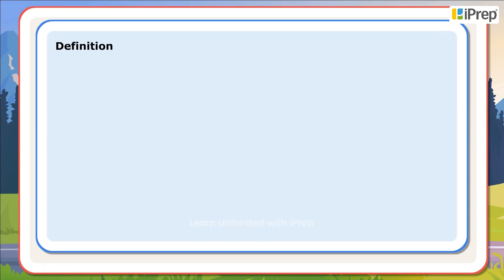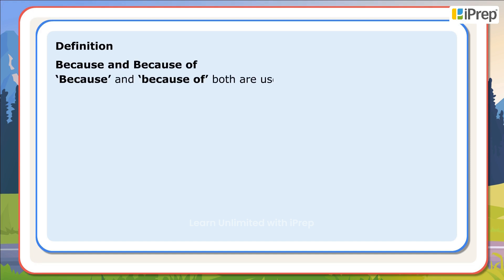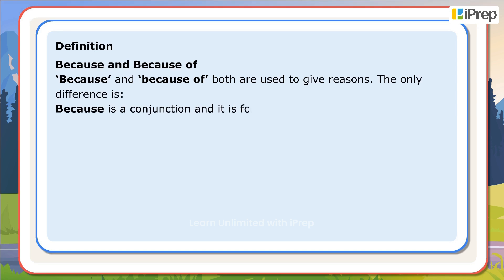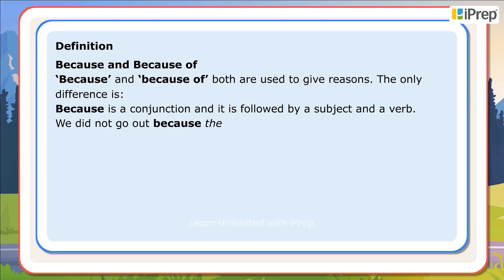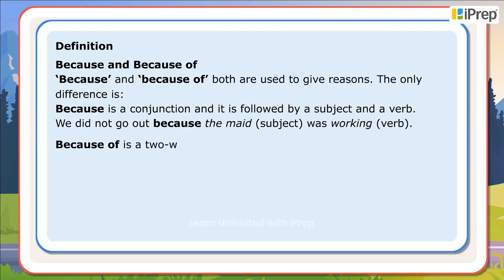Definition: 'Because' and 'because of' are both used to give reasons. The only difference is that 'because' is a conjunction and it is followed by a subject and a verb. For example: We did not go out because the maid was working — 'maid' is the subject and 'was working' is the verb.